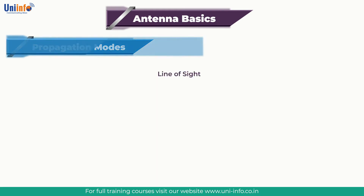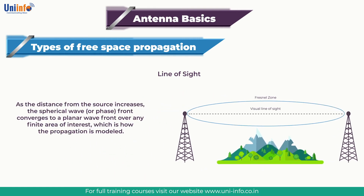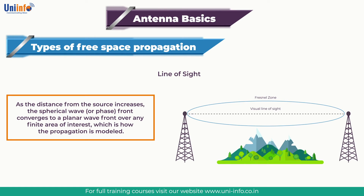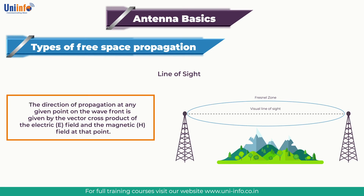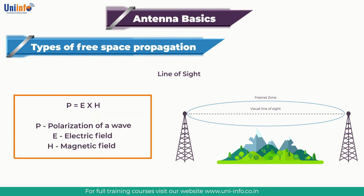Next come Types of Free Space Propagation. In free space, electromagnetic waves propagate outwards from the source in all directions, resulting in a spherical wave front from an isotropic radiator. As distance increases, the wave front converges to a planar wave front. The direction of propagation at any given point is given by the vector cross-product of the electric field E and magnetic field H at that point, and the polarisation is defined as the orientation of the plane containing the E field. This cross-product, P = E × H, is called the Poynting vector. When the Poynting vector is divided by the characteristic impedance of free space, the resulting vector gives both the direction of propagation and the power density.